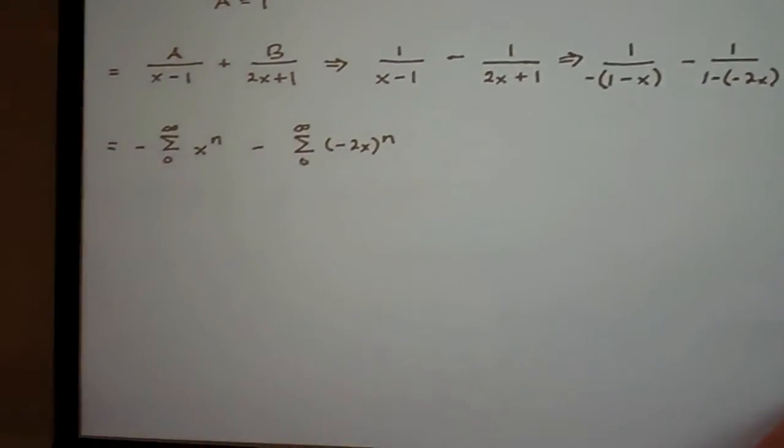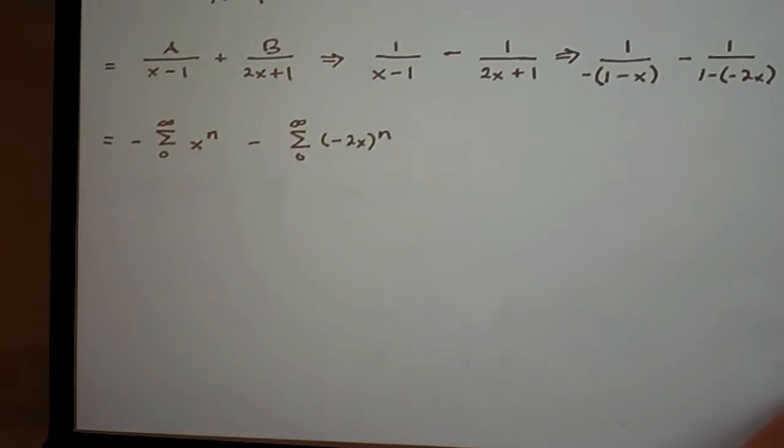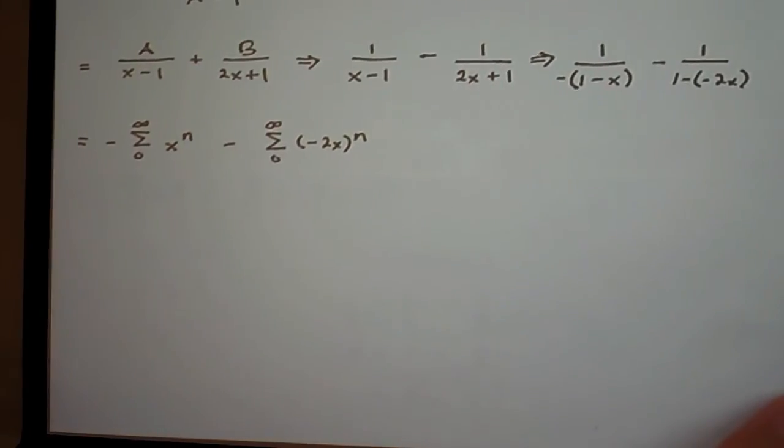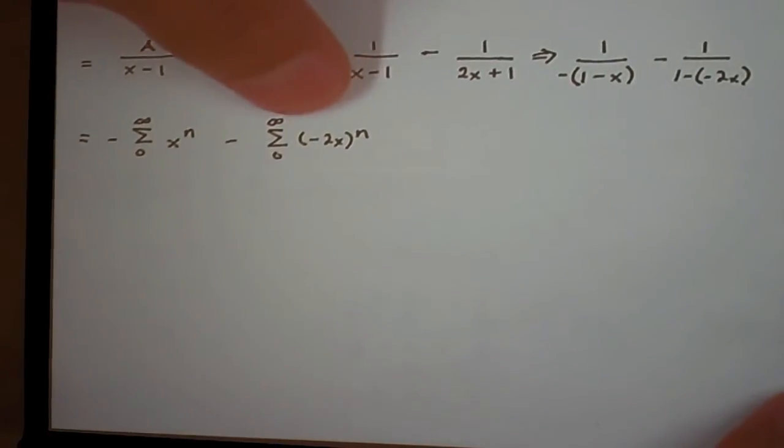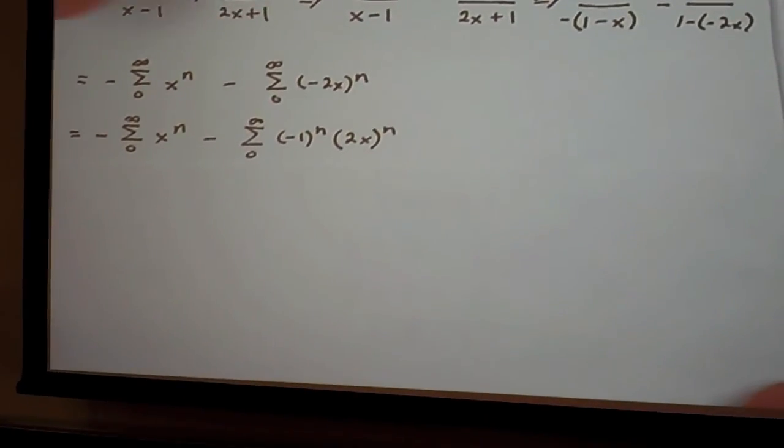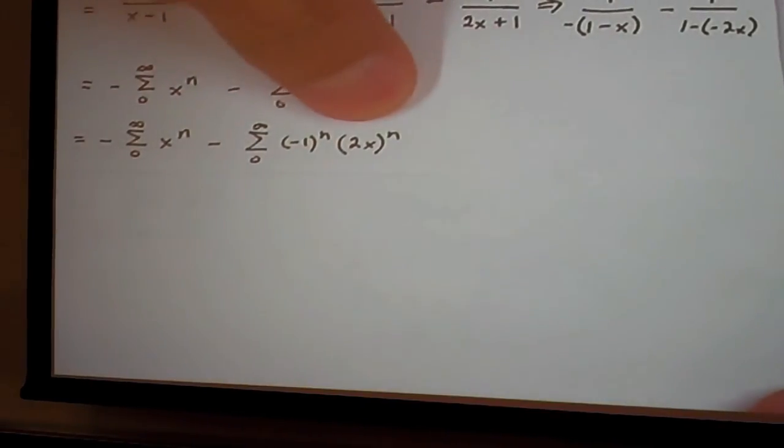So now we have the negative sum of x to the n from 0 to infinity minus negative 2x to the n from 0 to infinity. We can simplify the second term to make it look like negative 1 to the n times 2x to the n.